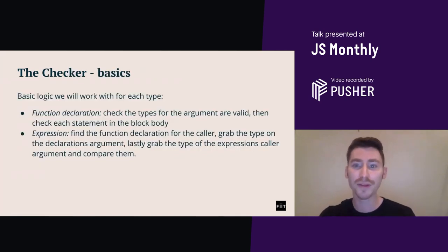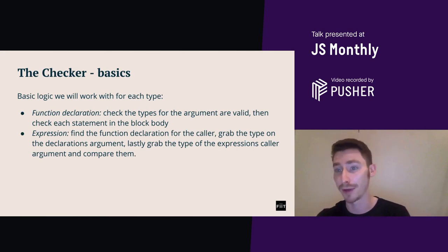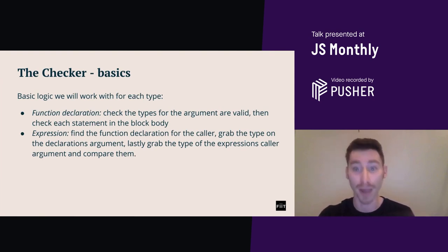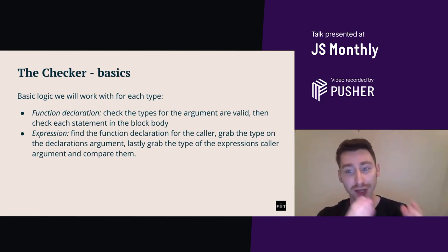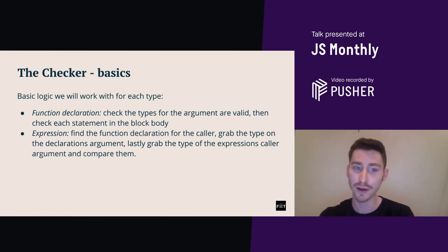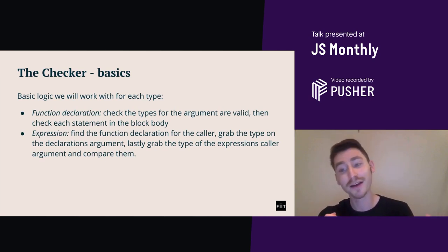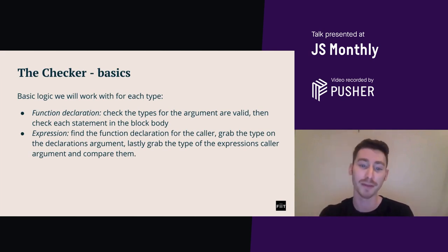Now onto the part of the compiler which does our type checks. We've got three slides to look at for this, all under the single function called 'checker'. It needs to iterate through all the program body AST objects and, depending on the node type, do the appropriate checks, where we're going to add any errors onto an array to be returned to the caller for printing. The basic logic we will work with for each type is: for our function declaration, we're going to check the types for the argument are valid, then check each statement in the block body. For our expression, we're going to find the function declaration for the caller, grab the type of the declaration's argument, grab the type of the expression's call argument, and then compare them to make sure they're the same type.